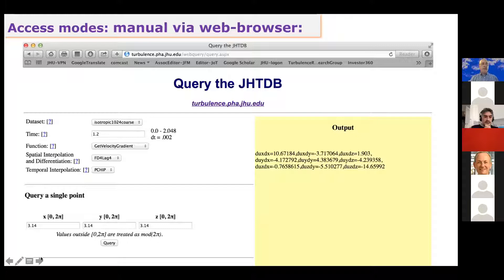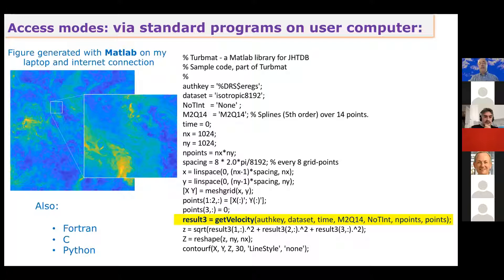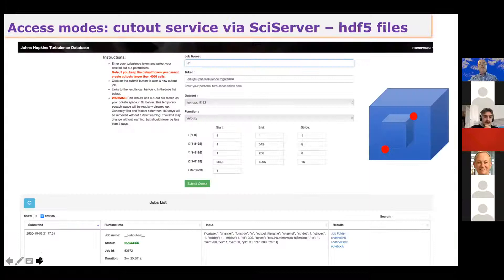You can run a MATLAB code that initializes an array of points, then uses a get_velocity command specifying the dataset, time, interpolation method, number of points, and the array. On return you get the velocity. This is how plots from an 8000-cube dataset were generated — very easily. This access mode works well for particular subsets: a single plane, a line, or data as a function of time. That's often all we need, and it's very easy to make available this way.